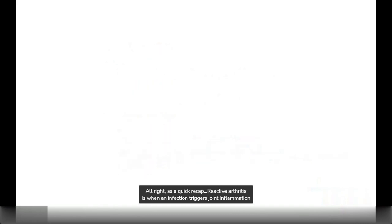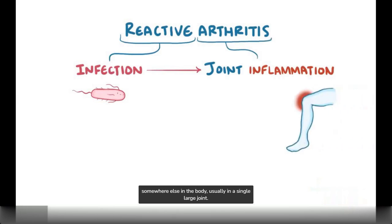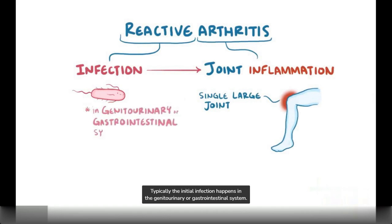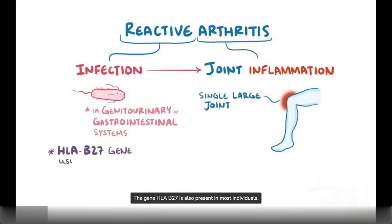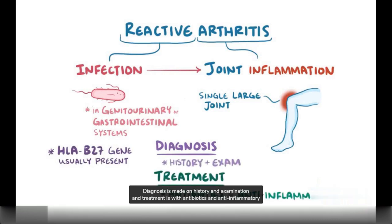As a quick recap: reactive arthritis is when an infection triggers joint inflammation somewhere else in the body, usually in a single large joint. Typically, the initial infection happens in the genitourinary or gastrointestinal system, and the gene HLA-B27 is present in most of these individuals. Diagnosis is made on history and examination, and treatment is with antibiotics and anti-inflammatory medication.